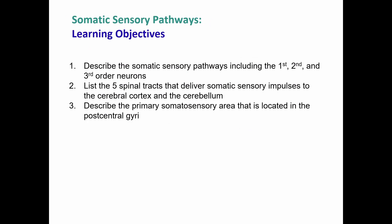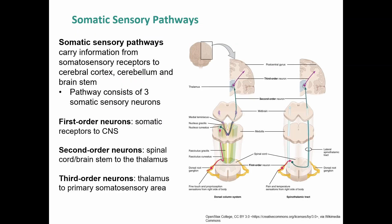We'll roll right into somatic sensory pathways. We'll talk about the neuron order and where we find them, the spinal tracts and breaking down their names, and the somatosensory area in the post-central gyrus. The somatic sensory pathways carry information from somatosensory receptors to the cerebral cortex, cerebellum, and/or brainstem.